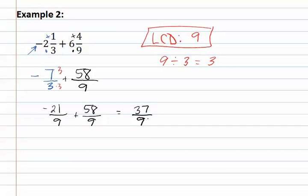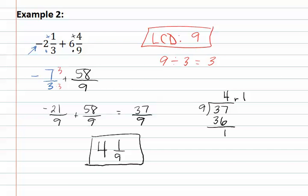Remember, this is not your final answer as you must change it back to a mixed number. To do this, we use long division. 9 divides into 37 4 times. 9 times 4 is 36 with 1 remaining. Remember, that remainder is what becomes our new numerator. So, we have 4 and 1 ninth. This is our final answer.